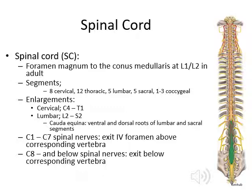C1 through C7 spinal nerve roots exit the intervertebral foramen above the corresponding vertebrae. C8 and below exit below the corresponding vertebrae.